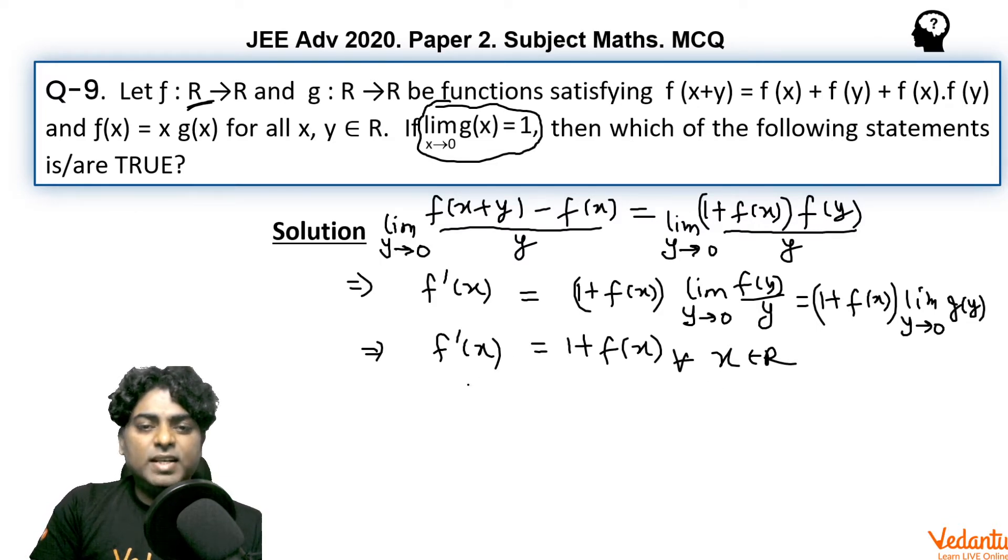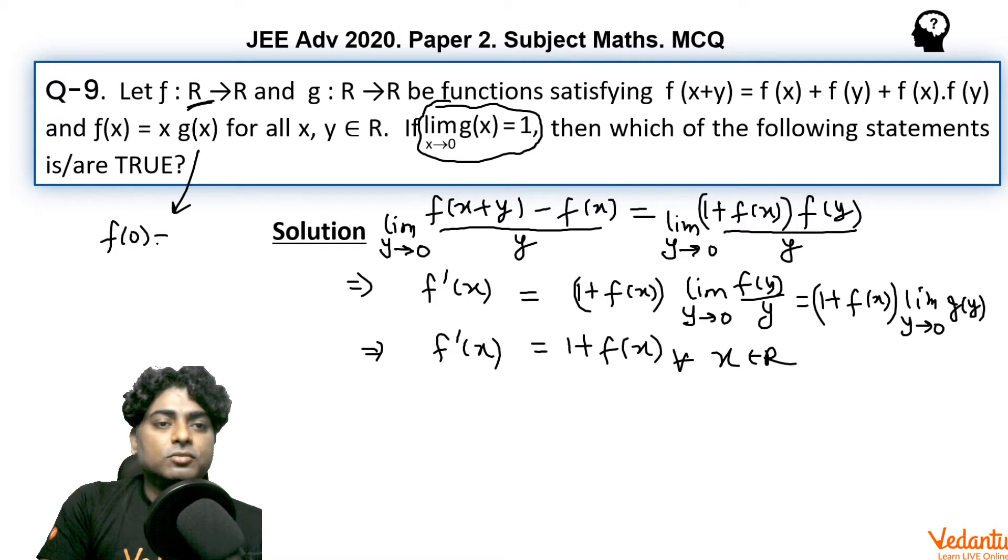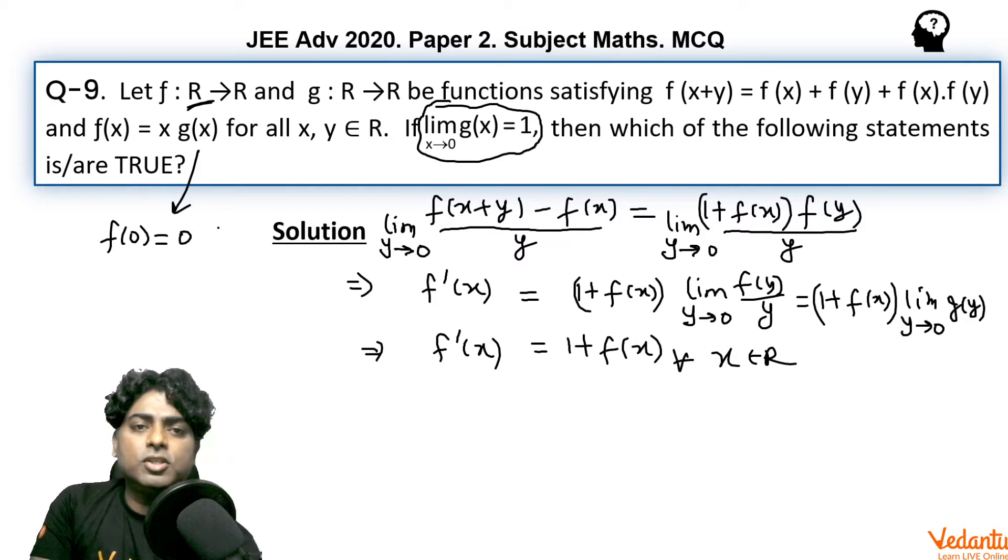Going for little integration at this stage, we will get to know f(x) also. But in order to check option A, it is sufficient to say that f is differentiable everywhere. And one more thing, if you put 0 over here, then f(0) will come to be 0. Because f(0) is 0 times g(0), g(0) is something which is not known but is defined everywhere. As g is defined everywhere, g(0) must be something finite.